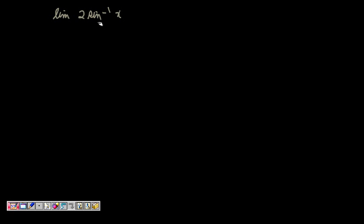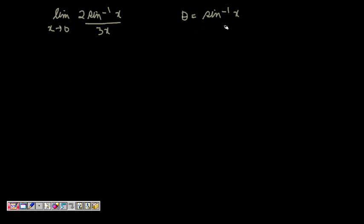We will look at some more interesting problems. One is a limit problem with an inverse function: limit of (2·sin⁻¹x)/(3x) as x tends to zero. This is interesting because we have inverse functions, which makes things feel a little difficult, but we will solve it. For every problem, think about what we know that is similar. Let theta equal sin⁻¹x — that is, sin⁻¹x is the angle whose sine is x.